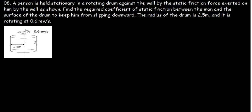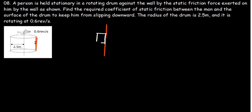Now we have to understand something here. Here is the drum from the diagram. There is this person who is rotating, and we know that when something is moving around the circle, there is a centripetal force which is pointing toward the center. If there is centripetal force, then there is centripetal acceleration. This person is moving around the circle inside the drum. If I have the surface, then the object is here, and the force perpendicular to the surface is the normal force.